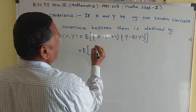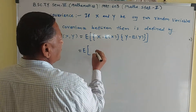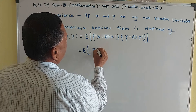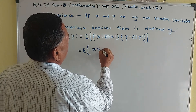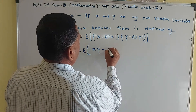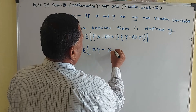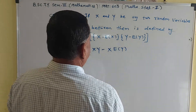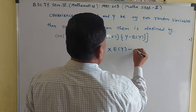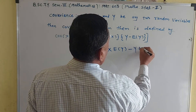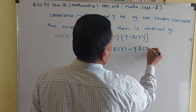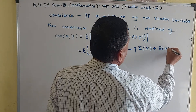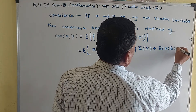Carrying out the product: XY minus X times E[Y], minus Y times E[X], then minus times minus becomes plus E[X] times E[Y].